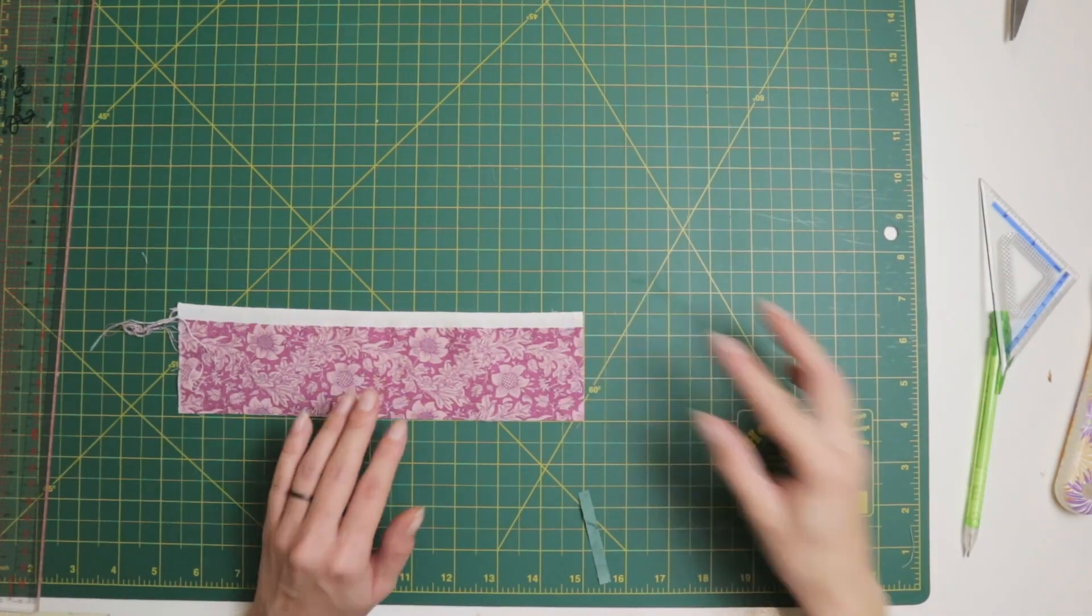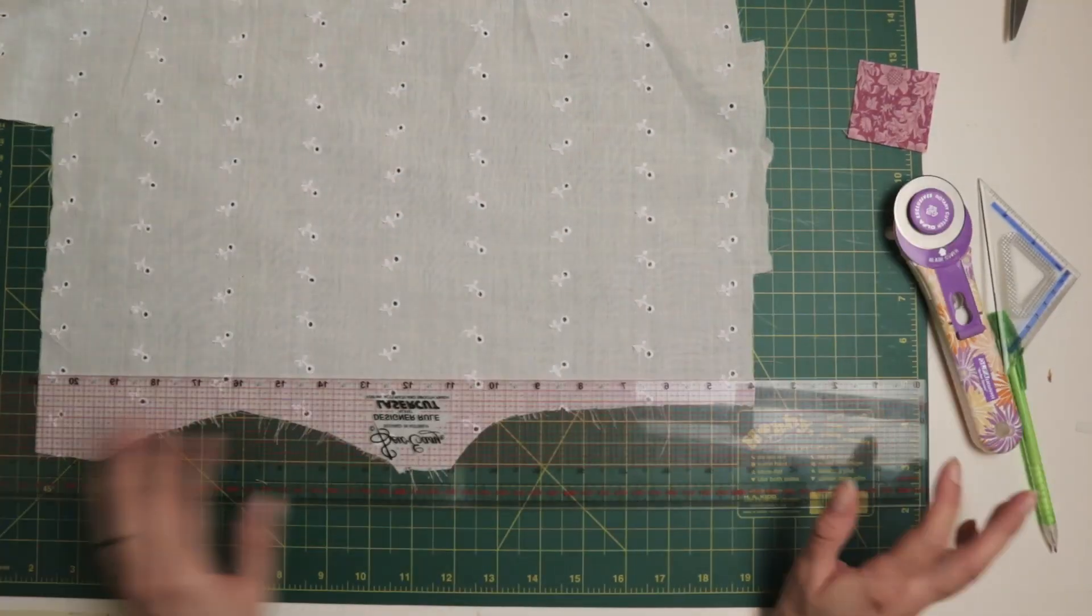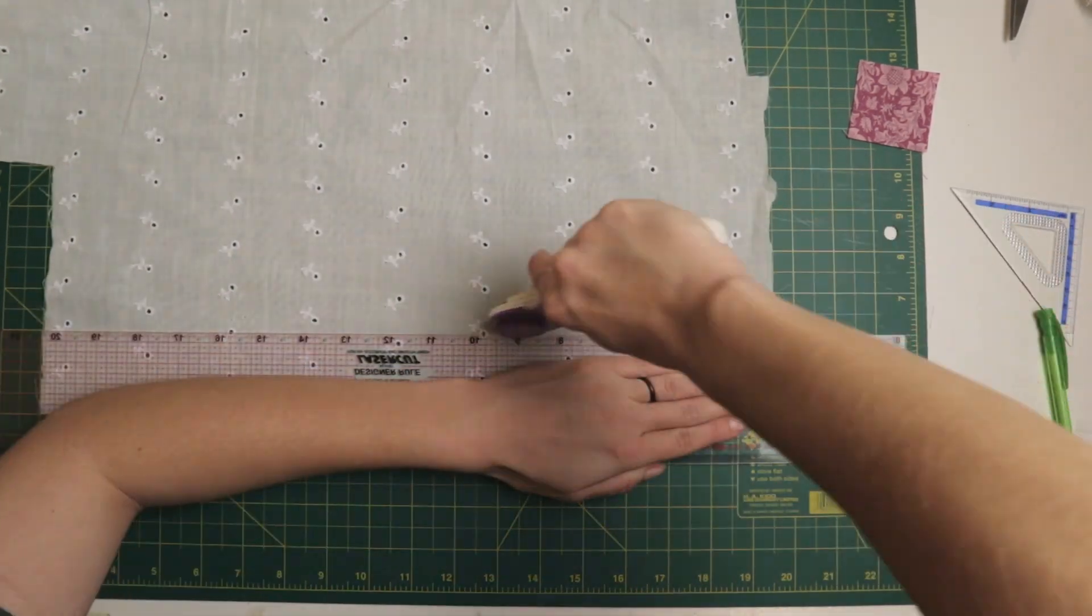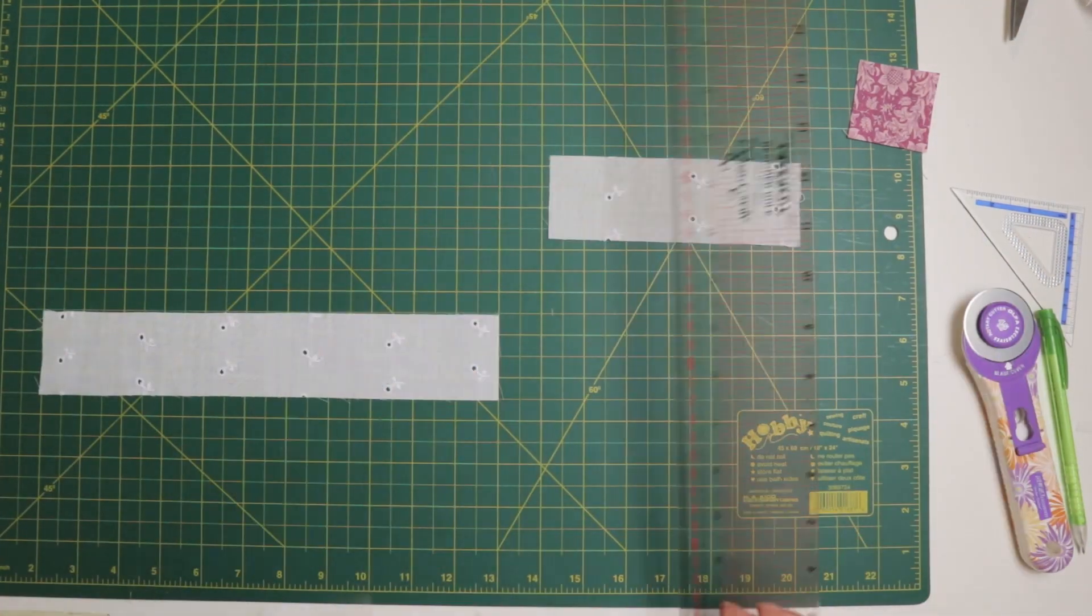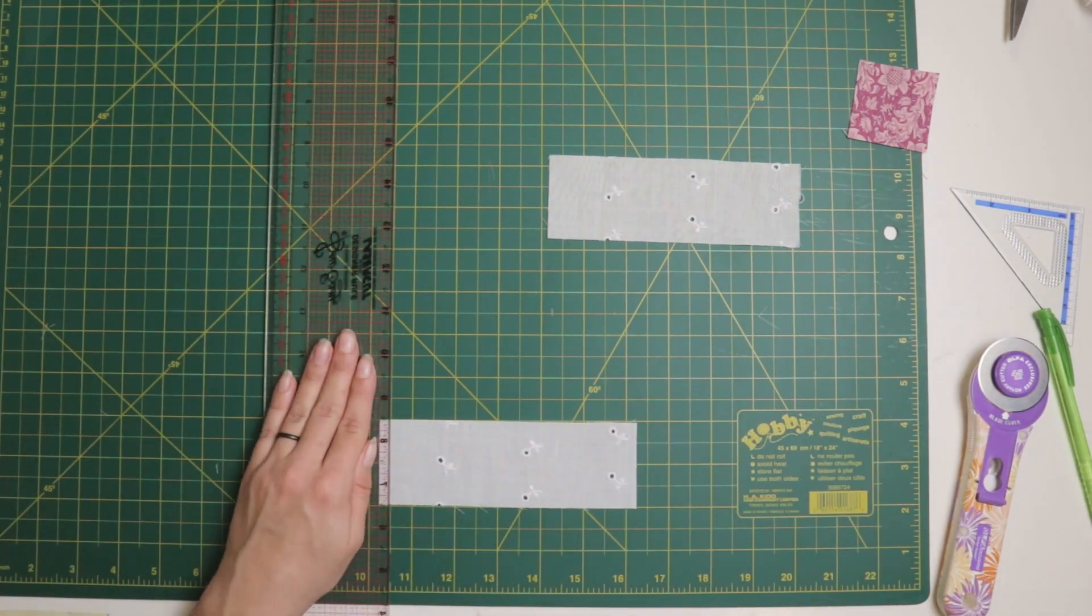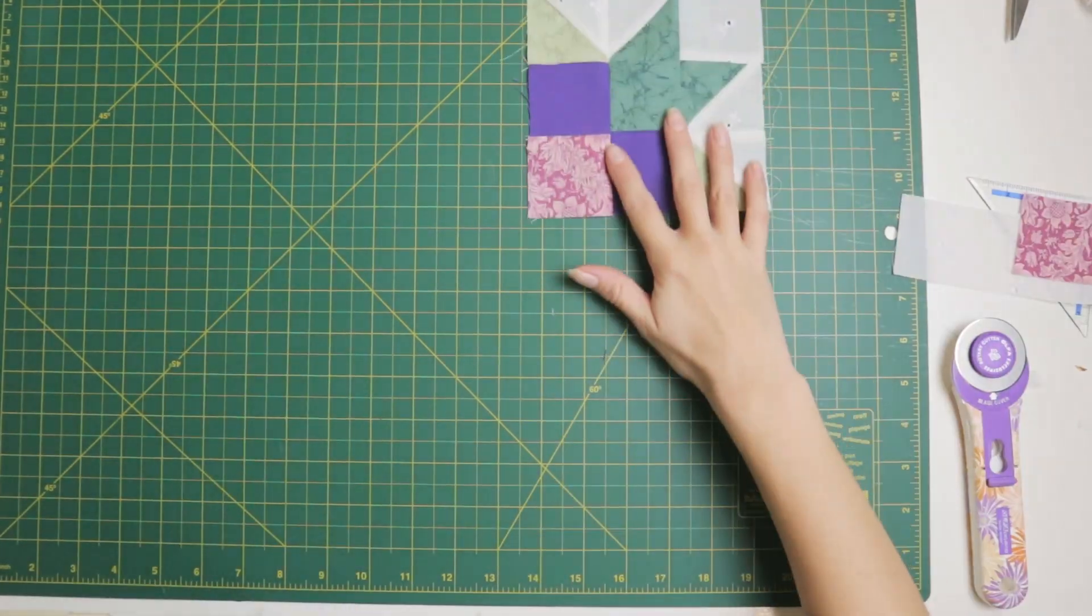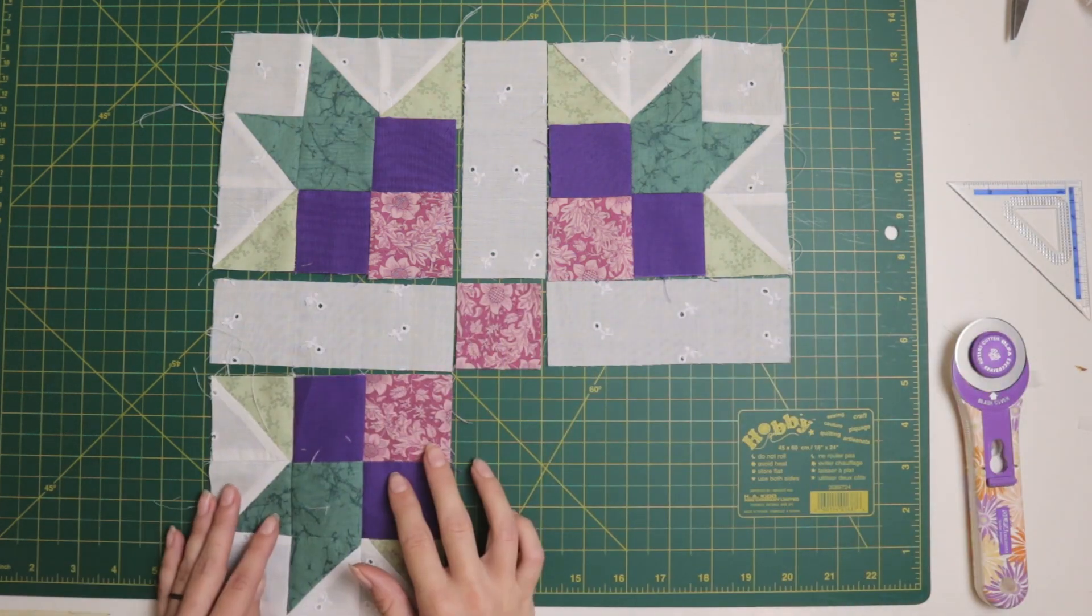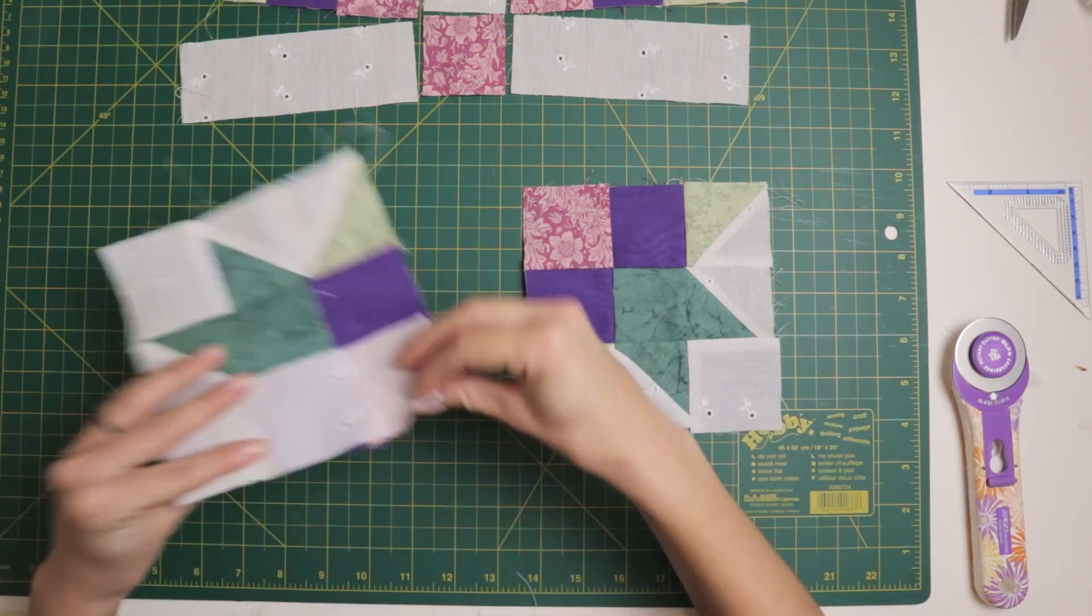With the corners done, the hard part was out of the way, and I moved on to the middle strips that join it all together. I cut out a two inch square from the light purple to go in the middle of the block, and from the white I cut out four rectangles measuring two inches by five and three quarter inches. Once I had all the pieces cut out and ready to be assembled, I was able to lay it all out in the correct order and get my first look at the finished block. I pinned the rows each right sides together to prep them for sewing.